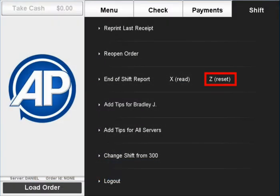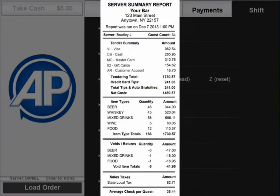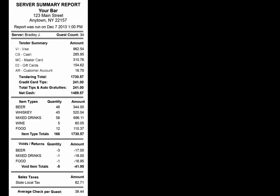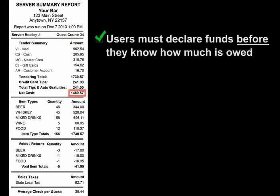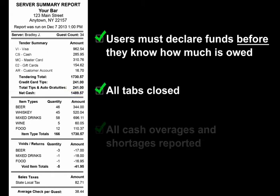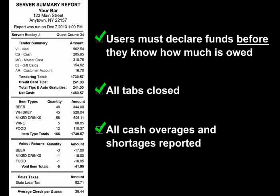At the end of every shift, bartenders will Z out their drawers, declaring all money to the house before finding out how much money is owed. AccuPause ensures that all tabs are closed and that all cash overages and shortages are reported to management.